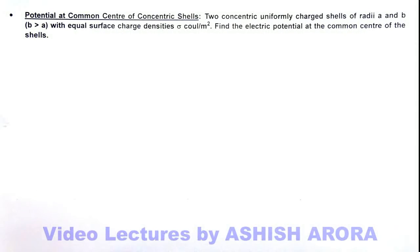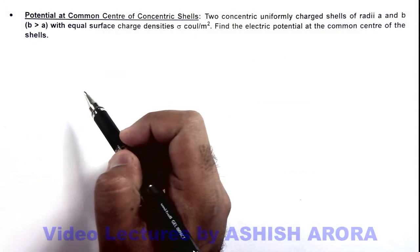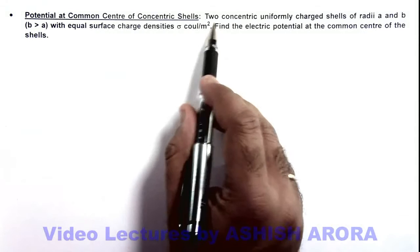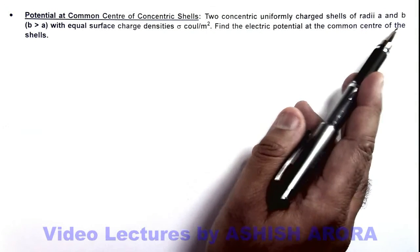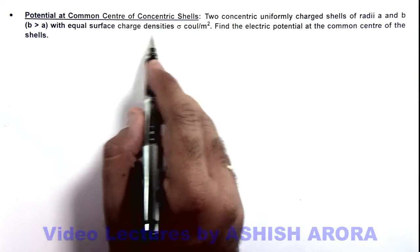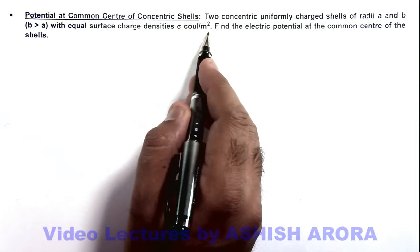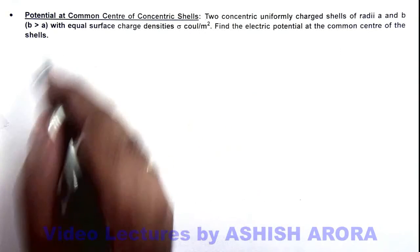In this illustration we'll calculate the potential at the common center of concentric shells. It is saying two concentric uniformly charged shells of radii a and b, with b greater than a, with equal surface charge density sigma coulombs per meter squared. We are required to find the electric potential at the common center of the shells.